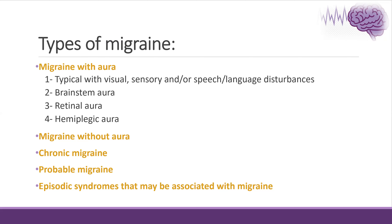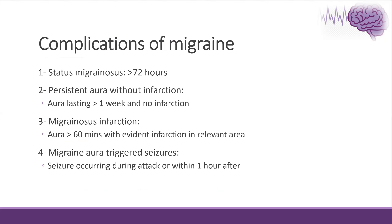For the aura, we have classical visual, sensory, speech, language, brainstem aura, retinal aura, or hemiplegic aura. Complications from migraine include status migrainosus when migraine lasts more than 72 hours, persistent aura without infarction meaning the aura lasts more than 60 minutes with evidence of infarction related to the same presenting aura, and migraine aura-triggered seizures, which occur during the attack or within one hour after.